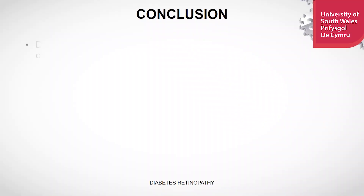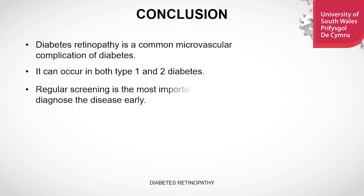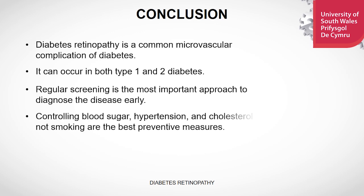In conclusion, diabetic retinopathy is a common microvascular complication of diabetes. It can occur in both type 1 and type 2 diabetes. Regular screening is the most important approach to diagnose the disease early. Controlling the blood sugar, blood pressure, and cholesterol level, and not smoking are the most important preventive measures for diabetic retinopathy. Thank you for watching. Until next time, goodbye.